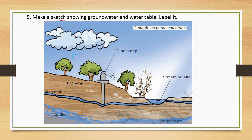Next question: make a sketch showing groundwater and water table and label it. You will need to draw a diagram showing the water table and groundwater layers below the ground, with clouds above representing rain. Label the water table and the groundwater. This way you have to complete the diagram with proper labels. Thank you.